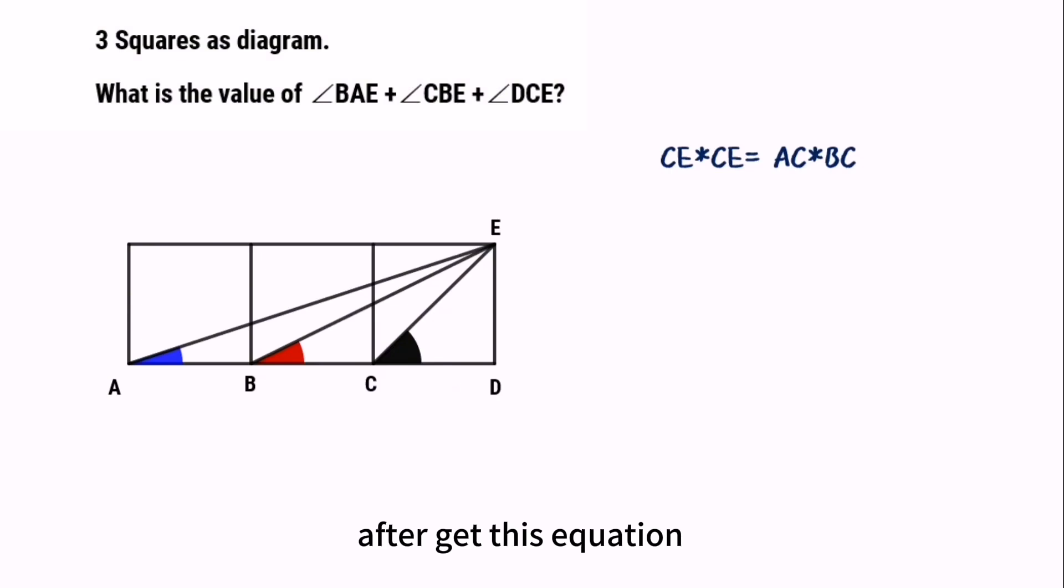After we get this equation, we can convert it to CE over AC equals BC over CE. Then, check it in the diagram. CE over AC. This is BC over CE.